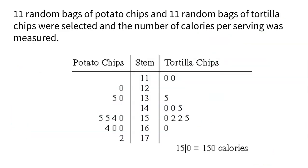Let's look at another one here. Here, we looked at 11 random bags of potato chips and 11 random bags of tortilla chips. And we selected the bags and we recorded the number of calories per serving that was measured in each bag. And now this is called a back-to-back. So we have two different sets of data, but we were measuring the same thing, the calories per serving.